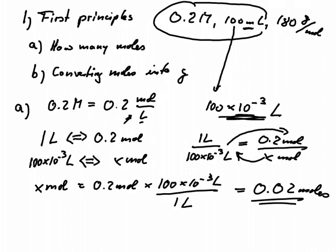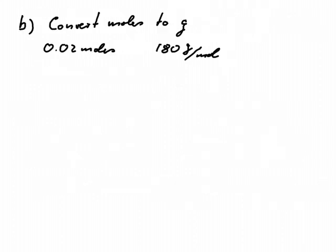And now we go to the second step. So in this second step, we convert the moles to gram. And again, we do it by first principles. We know that one mole is the equivalent of 180 grams. But we don't have one mole, we only have 0.02 mole. And that is the equivalent to x grams.